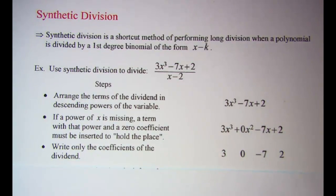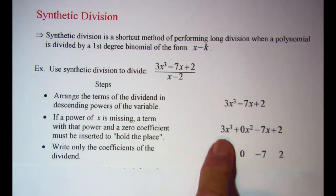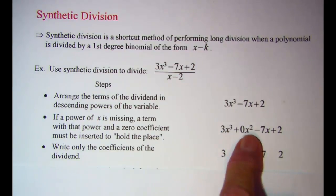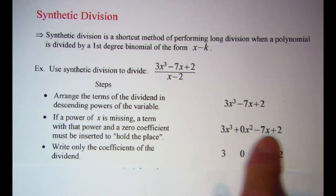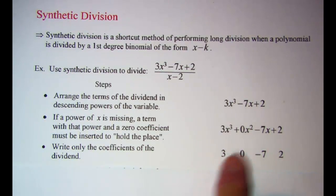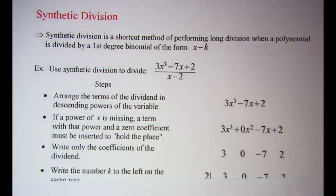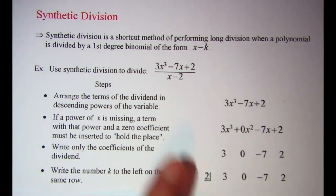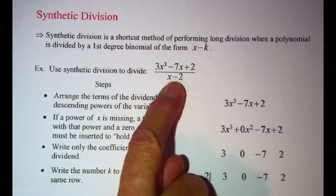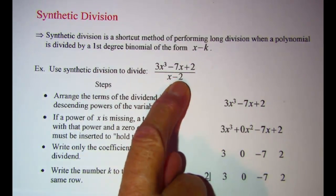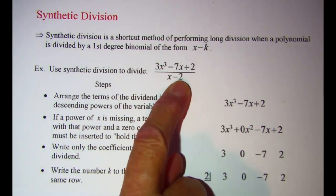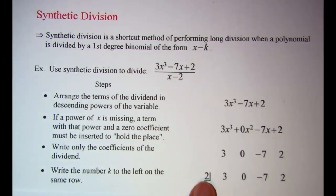Our next step for synthetic division: we want to write only the coefficients of the dividend, leaving out the x cubed, x squared, and x. So we write 3, then 0, then negative 7, then 2. Then write the number k to the left on the same row. In our problem the divisor is x minus 2, so k has the value 2, and we put 2 out to the left of the coefficients.